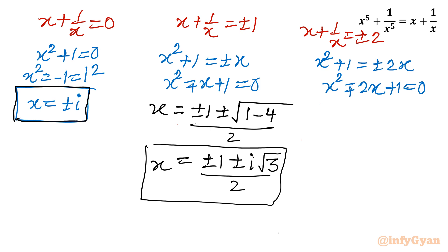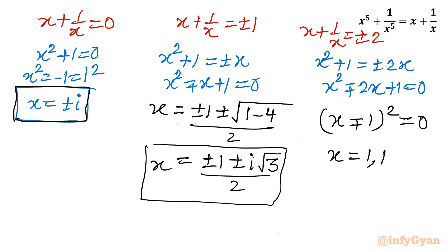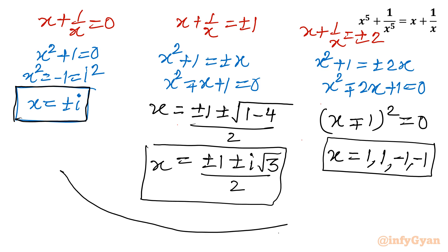The real solutions come from these perfect squares. (x minus 1) whole square equal to 0 gives x equal to 1 with multiplicity 2, and (x plus 1) whole square equal to 0 gives x equal to minus 1 with multiplicity 2. So we can write 1 and minus 1 each with multiplicity 2, giving overall 10 solutions using the binomial expansion method.